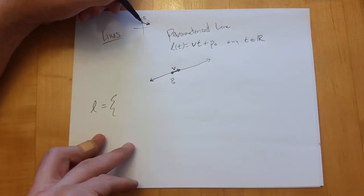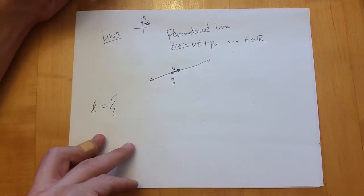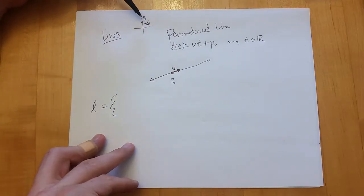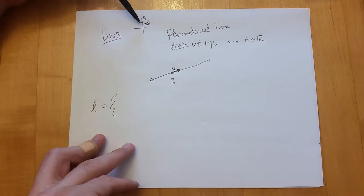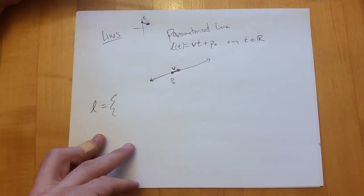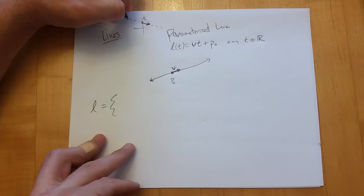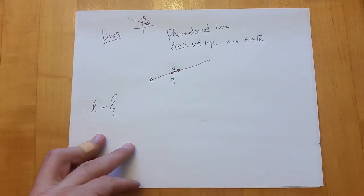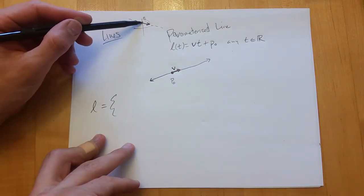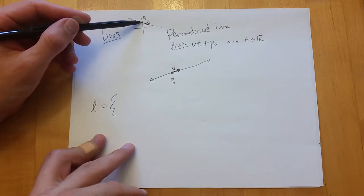If you want the slope-intercept concept: think of p-naught as the initial point, not really the y-intercept. In two dimensions, you'd say here's the y-intercept and my slope tells me how much to go over and down. So the slope is really equivalent to the direction vector from that point.